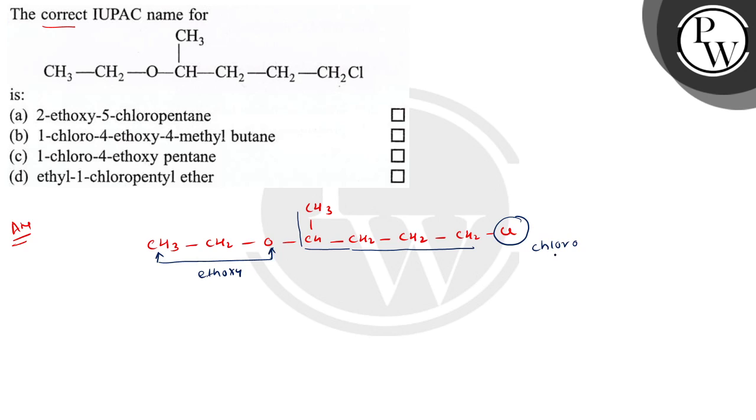According to alphabetical order, chloro will come first. So numbering will start from this side. It is 1, 2, 3, 4, and 5.